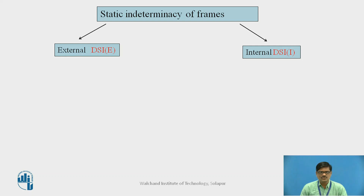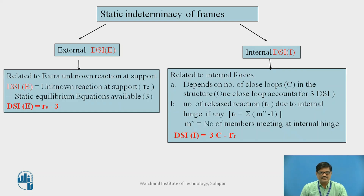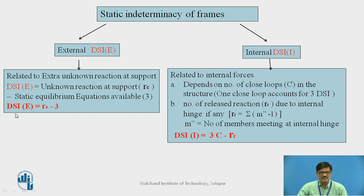Basically, there are two kinds of indeterminacies — one is external and another is internal. As far as external indeterminacy is considered, it is related to extra unknown reactions at support. So, DSI_E, where E stands for external indeterminacy, is nothing but the unknown reactions at support, denoted by RE, minus static equilibrium equations available. In case of frames, we have three equations: summation of H=0, summation of V=0, and summation of M=0. Therefore, external indeterminacy is written as DSI_E = RE minus 3.